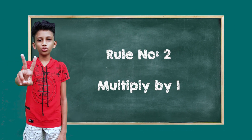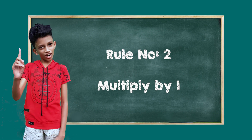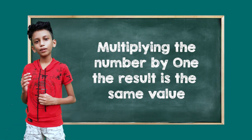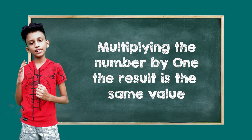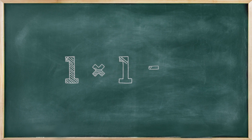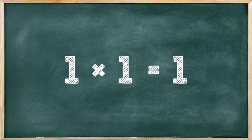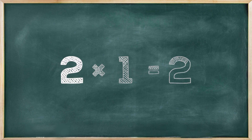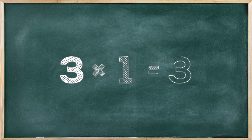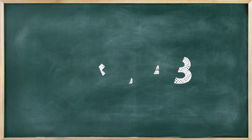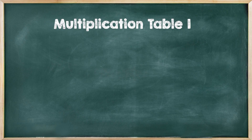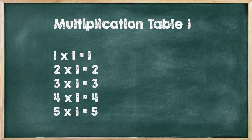Next, rule number 2: Multiplying by 1. Multiplying a number by 1, the result is the same value. 1 times 1 is 1. 2 times 1 is 2. 3 times 1 is 3. Like that, we can make the multiplication table of 1.